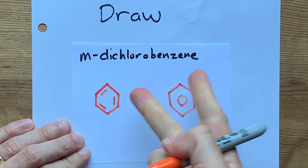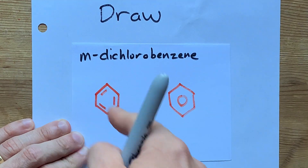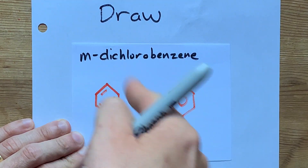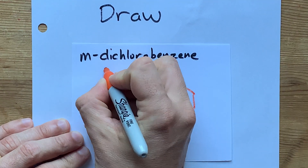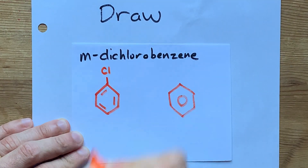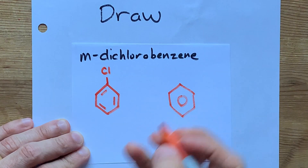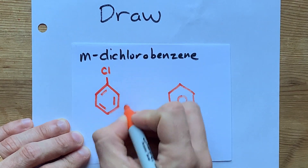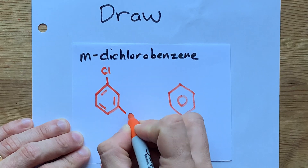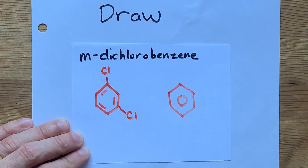Dichloro means there's two chlorines on the ring, but the M means that they are two carbons away from each other. So, for example, if I put my Cl here, my first Cl, I need to put the other chlorine 1, 2 away from it. So maybe this is like 1,3-dichlorobenzene in this case.